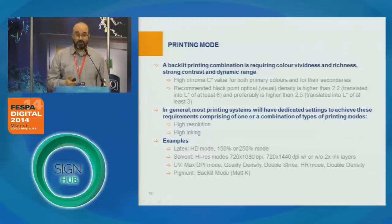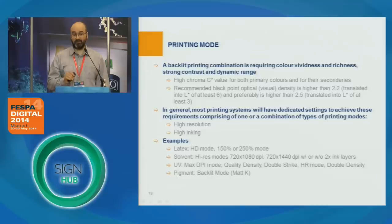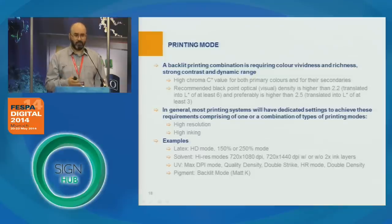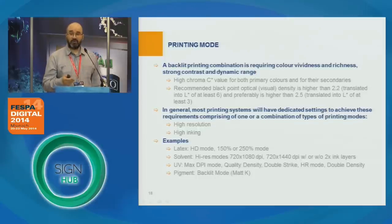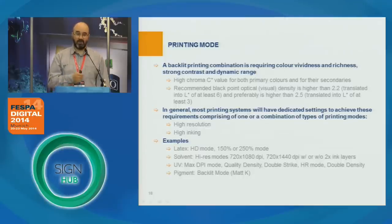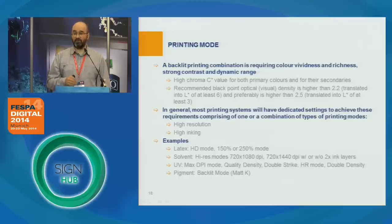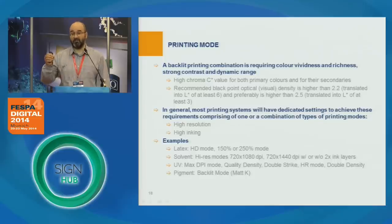Printing mode: this type of printing application requires a printing mode that puts a high amount of ink, achieved either by high-resolution printing or a resolution specifically designed for backlit application printing. These modes are usually slow and involve high ink amounts. On latex they are called high-density or 250 print modes. For solvent, you find high-resolution printing modes with usually one or two printing layers. For UV curable, you find names like double-strike, double-density, or even 'backlit mode.'